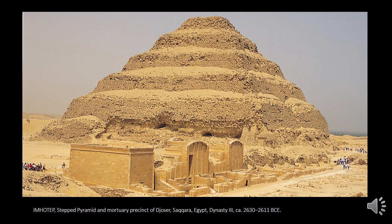Once Imhotep was able to figure out the math and engineering on how to build at this scale — how to organize the workforce and everything that goes into it — this really blew the doors open in terms of monumental architecture for the ancient Egyptians and for other cultures as well. But importantly, the step pyramid wasn't just a singular building out in the middle of the desert. As we'll see in the next slide, there was a lot more to this complex than just this one piece.